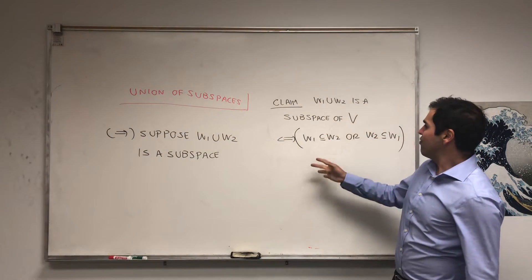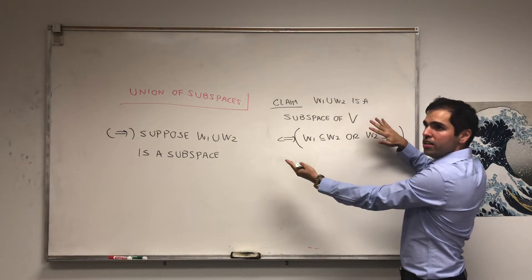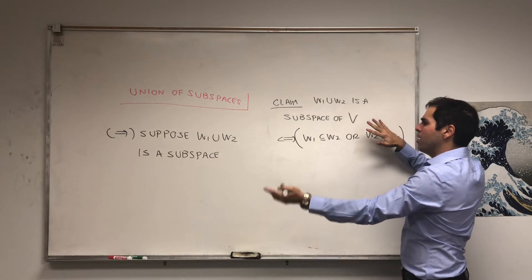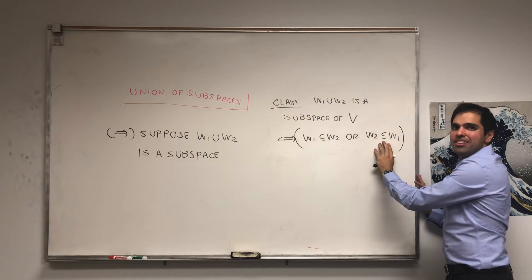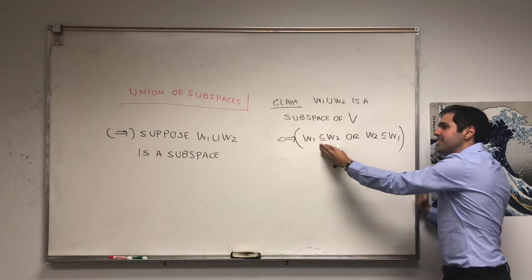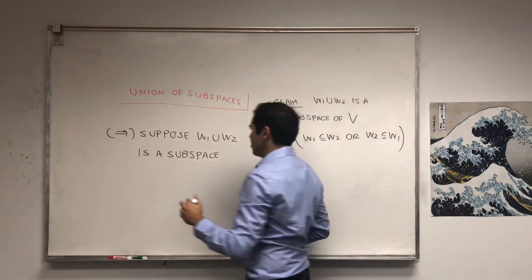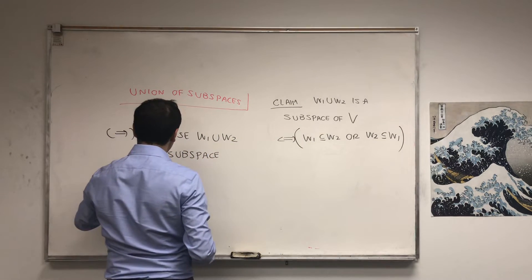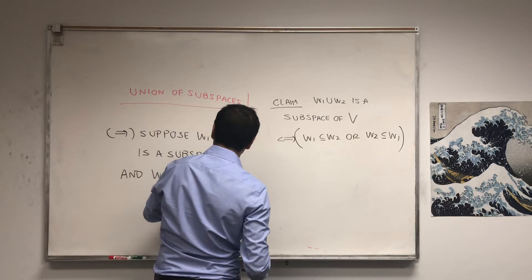Because then we're done. Because again, if it is true, then we're done. Because W1 is a subspace of W2. But if it's not, then we still show that this is true. So in any case, either one of them is true. So that's how you prove it. And suppose that W1 is not a subset of W2.